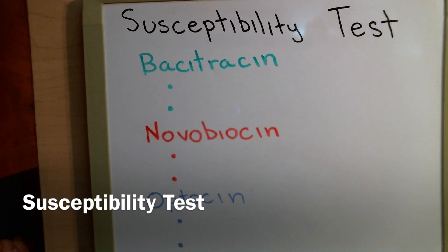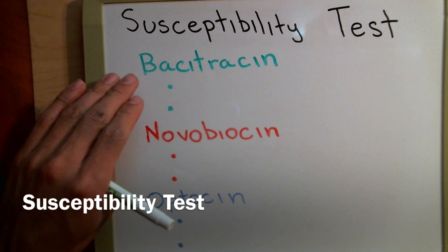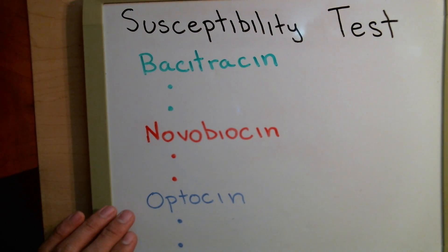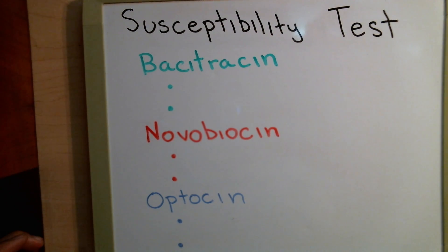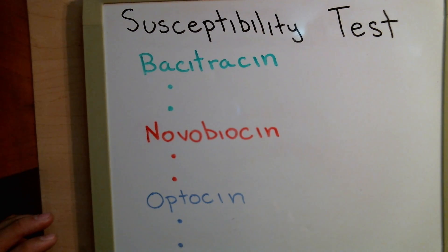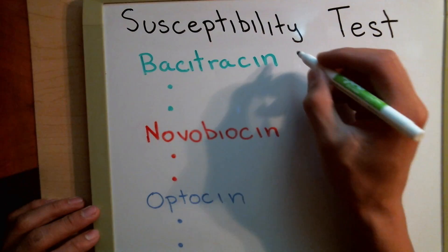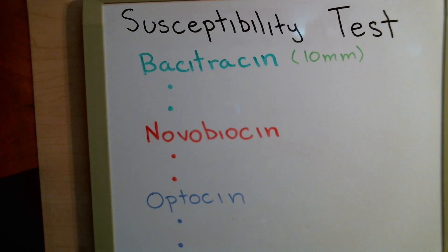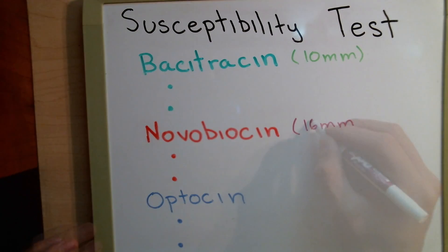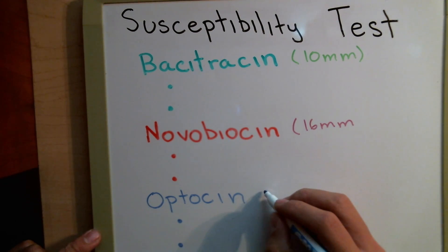First up, we're going to look at your susceptibility test, where we use Bacitracin, Novobiocin, and Optocin. You should be using 5 microgram discs along with the pre-made blood agar discs. The zone of inhibition for the following antibiotics should be as follows: Bacitracin should be at least 10 millimeters, Novobiocin should be 16 millimeters, and Optocin should be 14 millimeters.